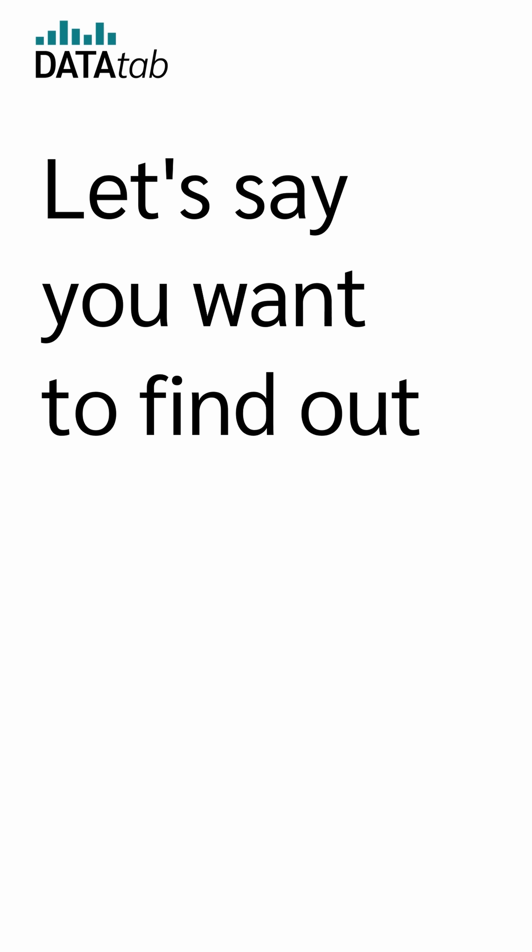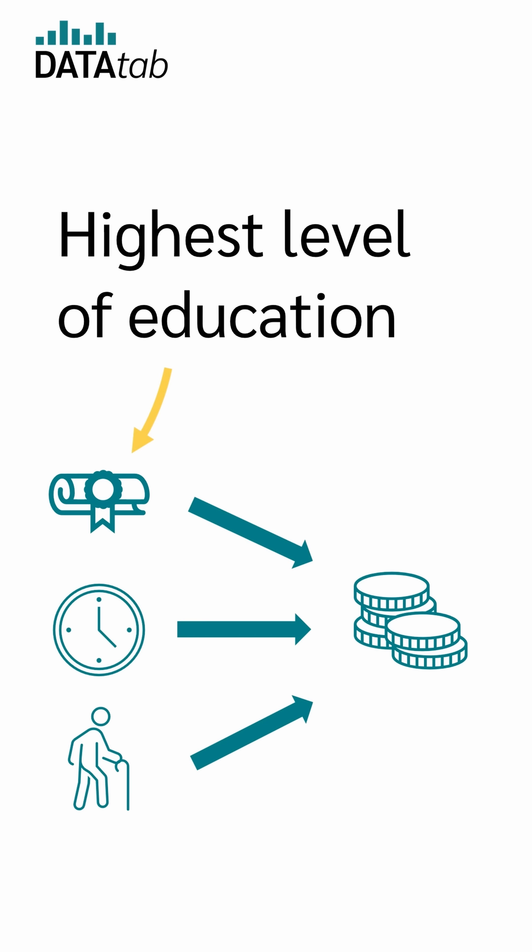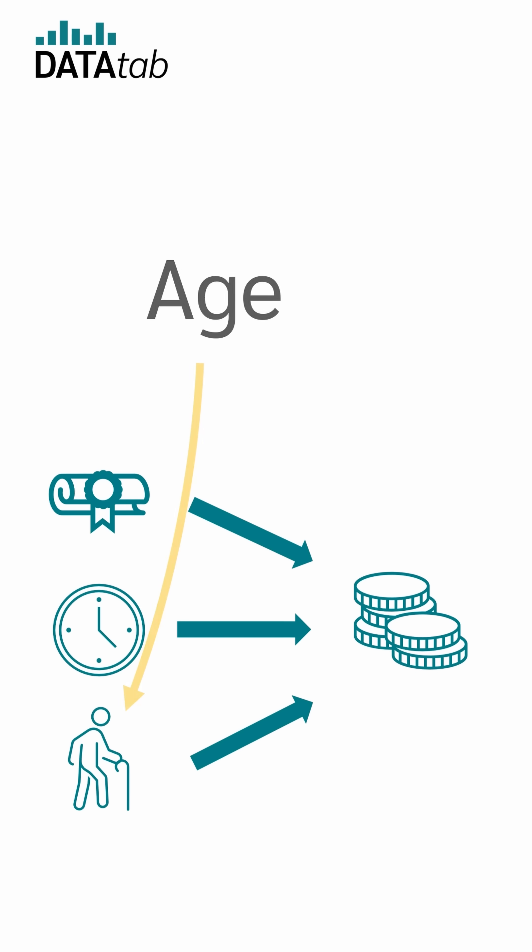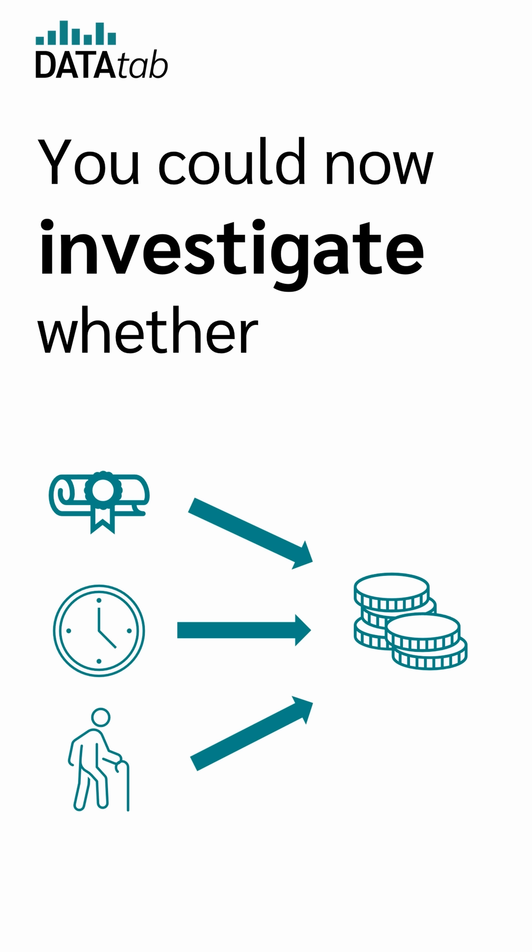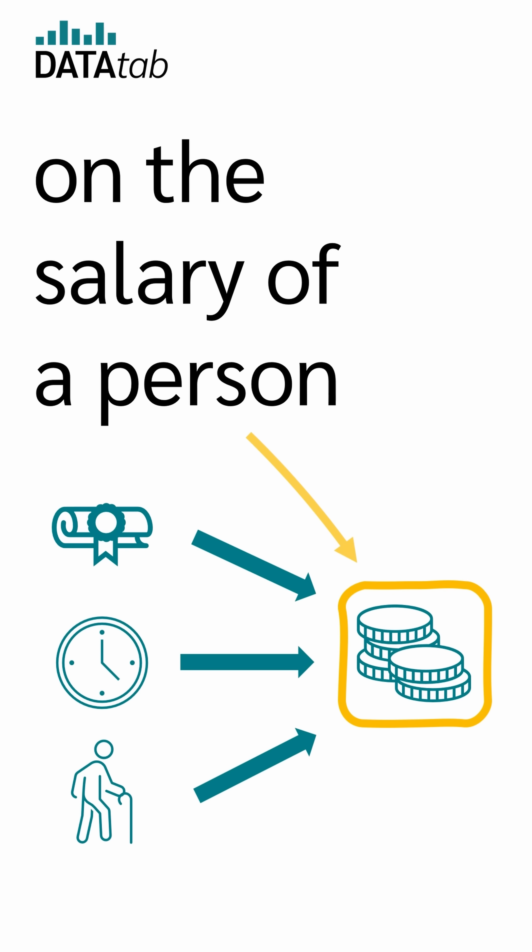Let's say you want to find out what influences a person's salary. For example, you could take the highest level of education, the weekly working hours, and the age of a person. You could now investigate whether these three variables have an influence on the salary of a person.